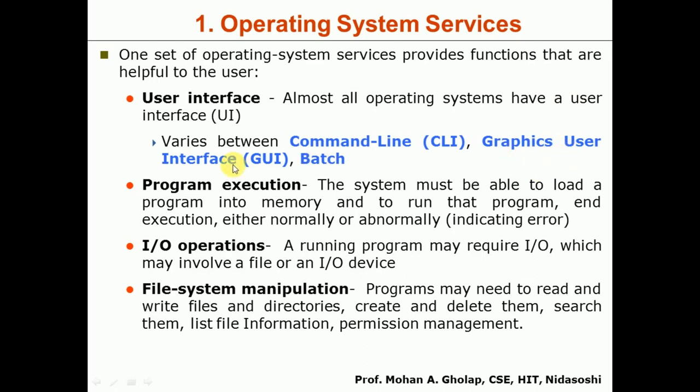The second user interface is the Graphical User Interface (GUI): as the name indicates, many graphical entities and icons appear on the screen. To open a particular application, you move your mouse cursor to its icon and double-click. The Windows operating system is a GUI. The third is the Batch User Interface, mainly used for mainframe and mini computers, where processes are executed in batches.